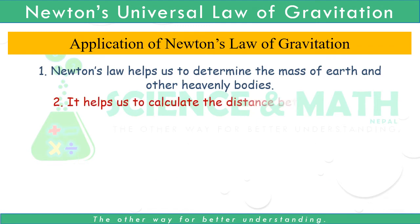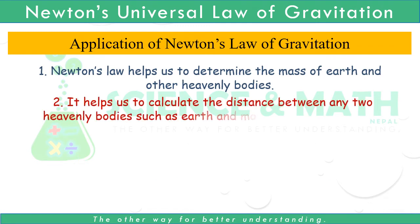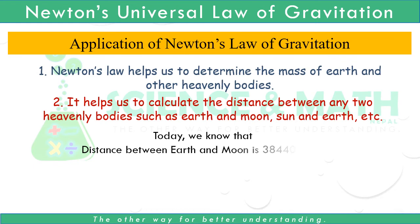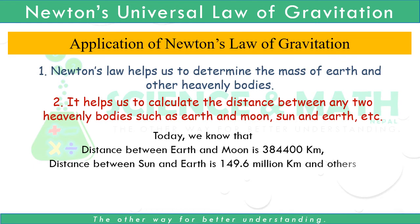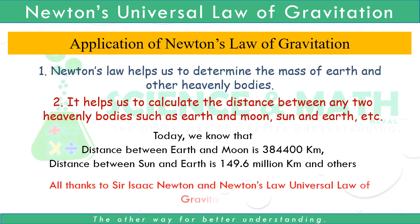2. It helps us to calculate the distance between any two heavenly bodies such as Earth and Moon, Sun and Earth, etc. Today we know that the distance between Earth and Moon is 384,400 km, and the distance between the Sun and Earth is 149.6 million km — all thanks to Sir Isaac Newton and Newton's Universal Law of Gravitation.